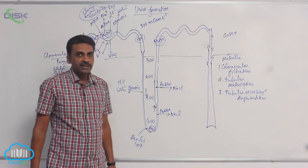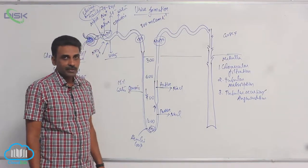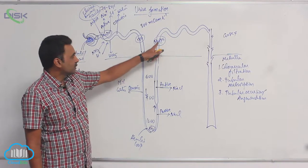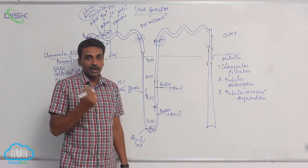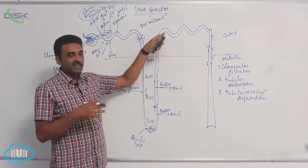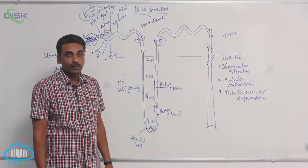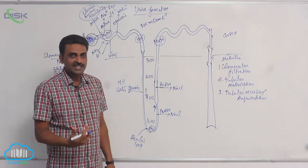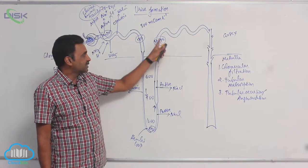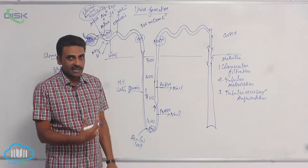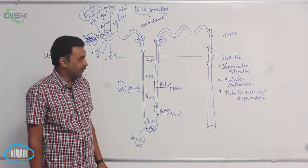The concentration of the fluid is now even less than 300 mOsm/L. So by the time it has reached the beginning of the distal convoluted tubule, its concentration has become less than that of the cortical fluid.